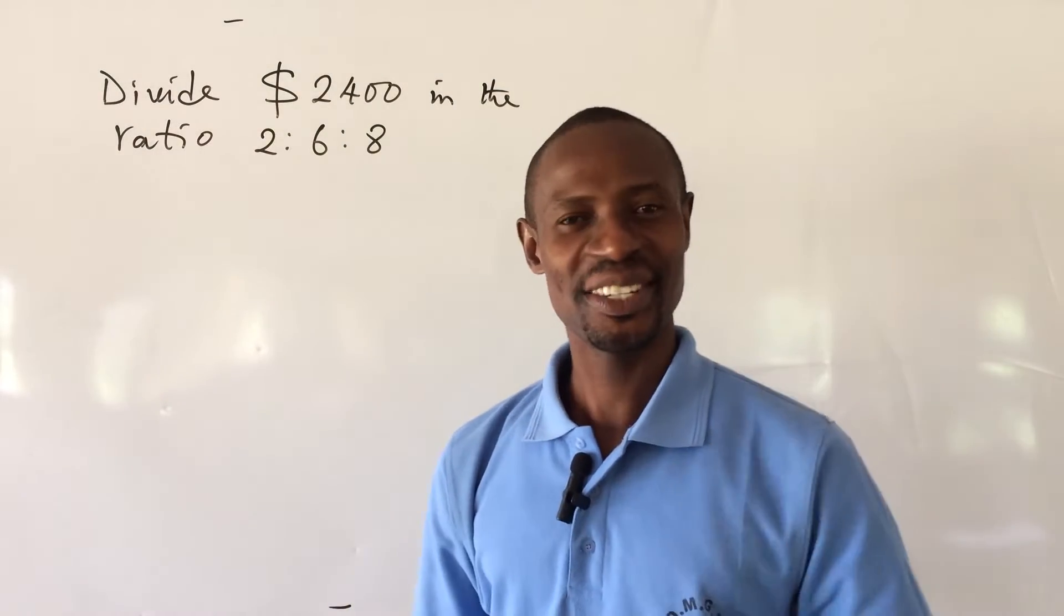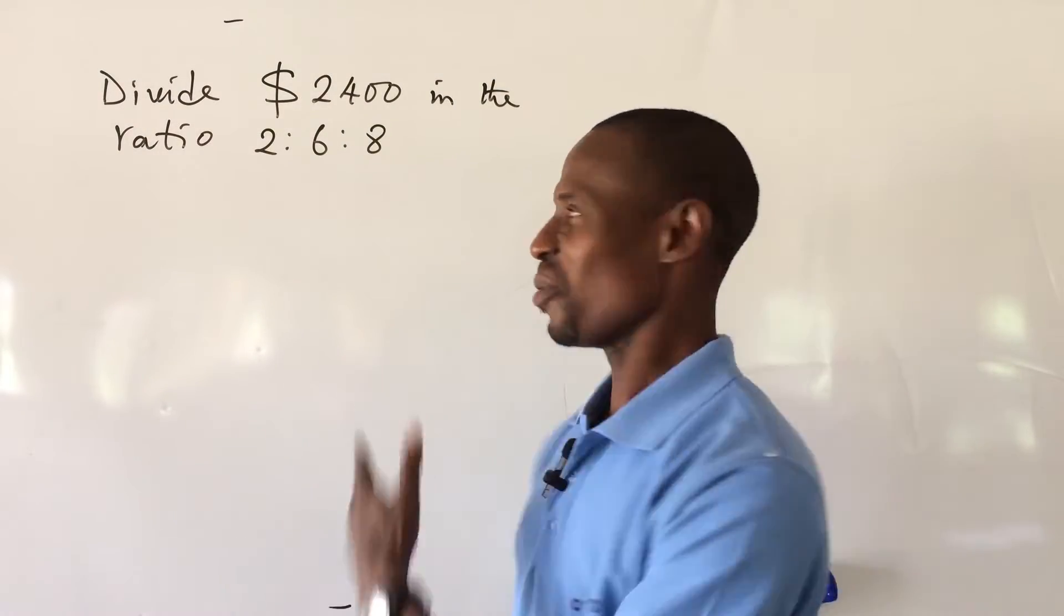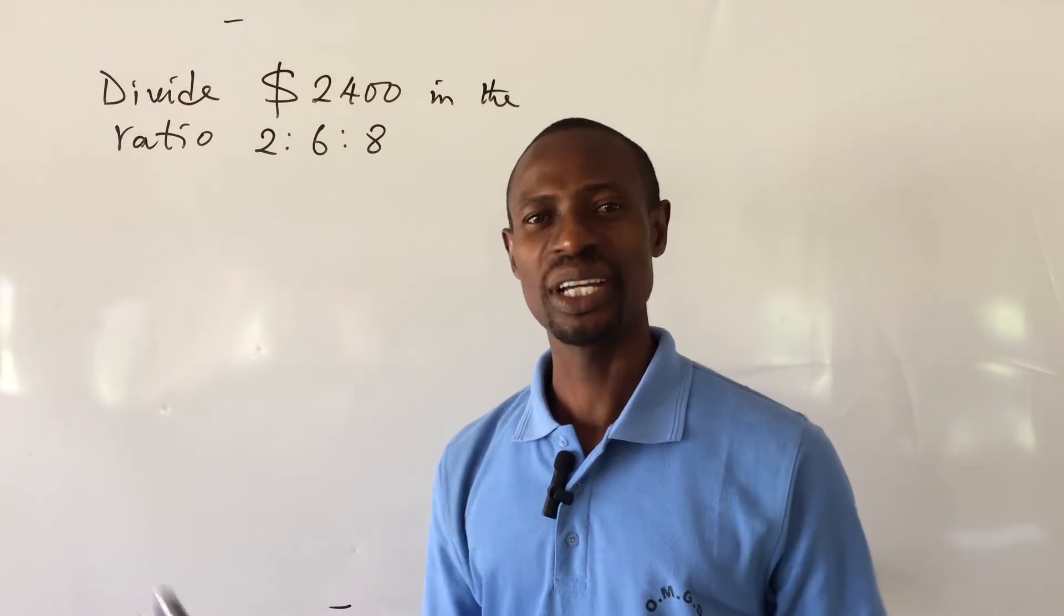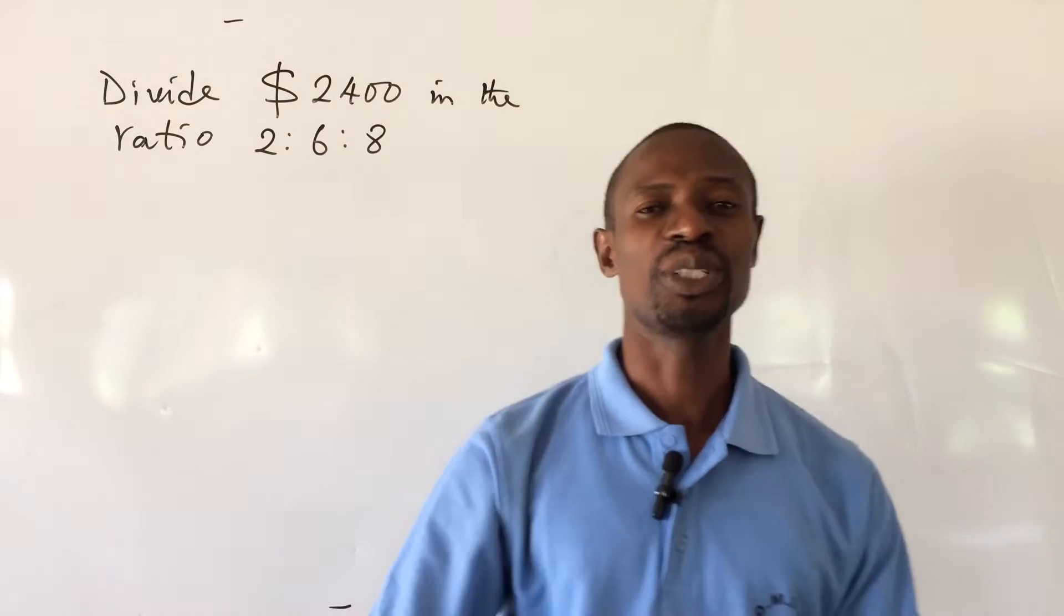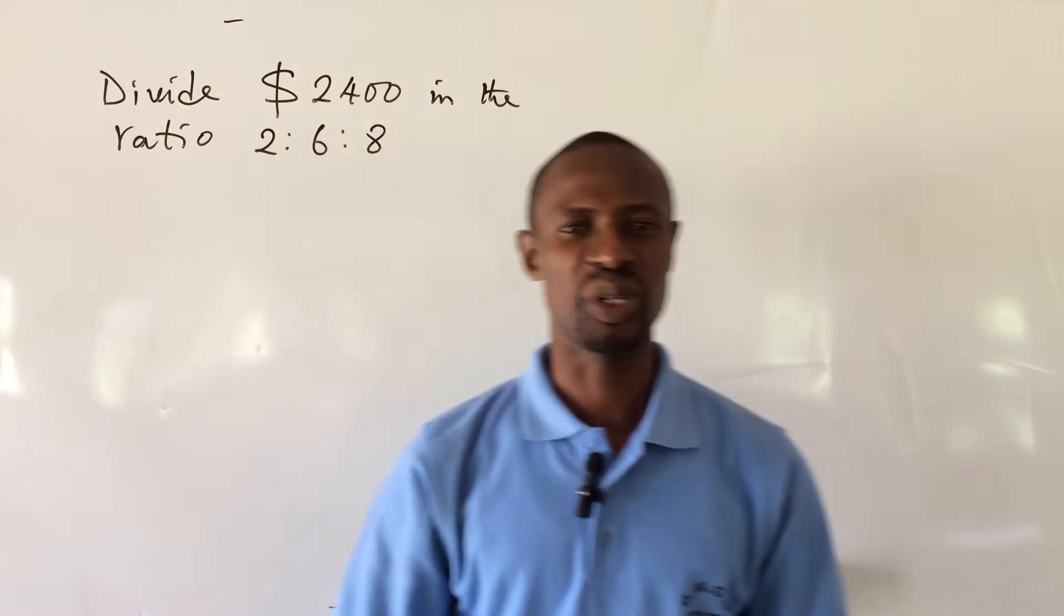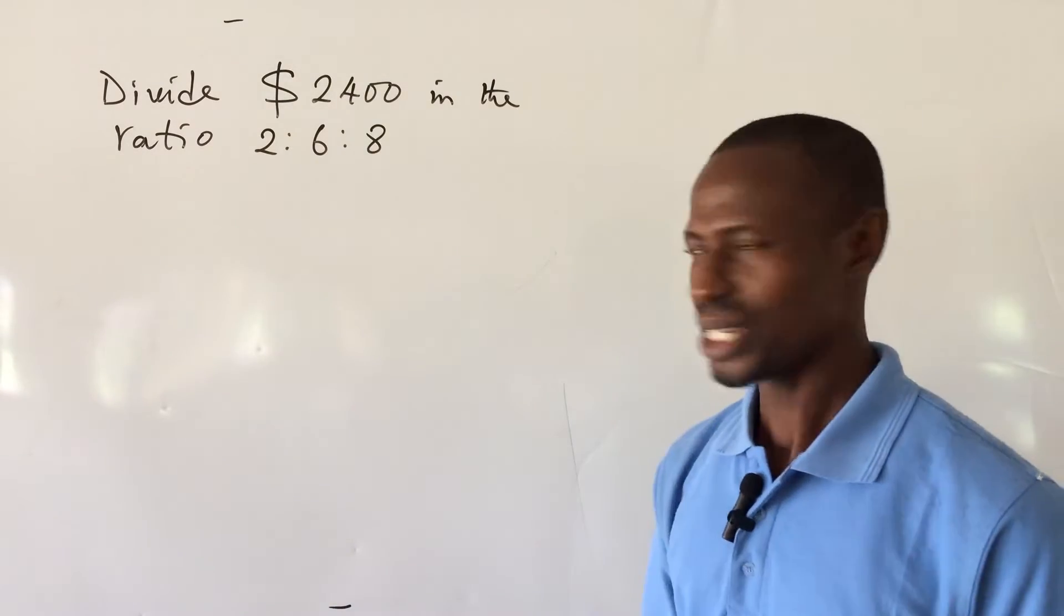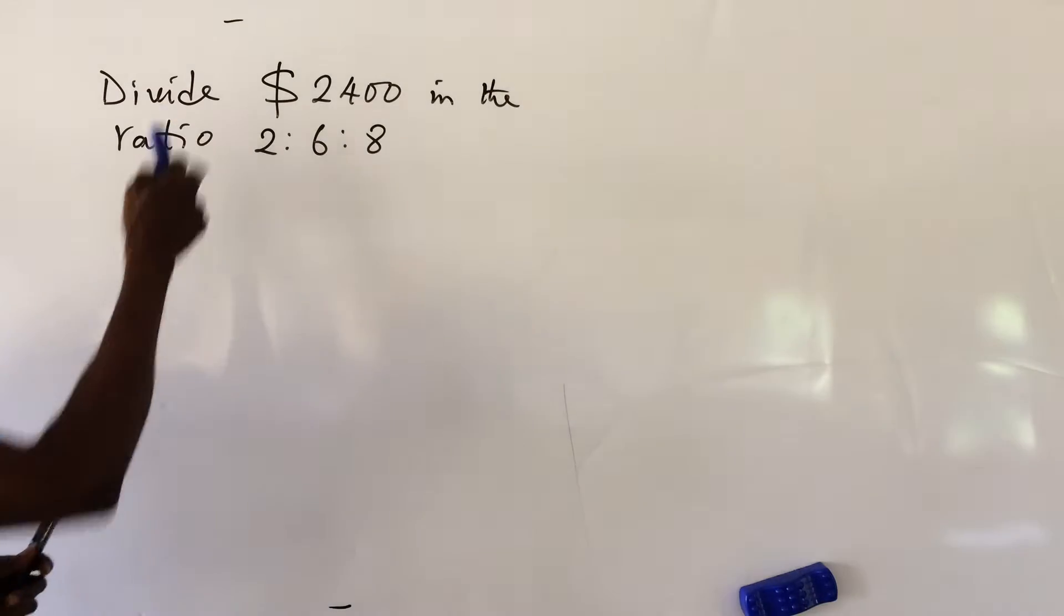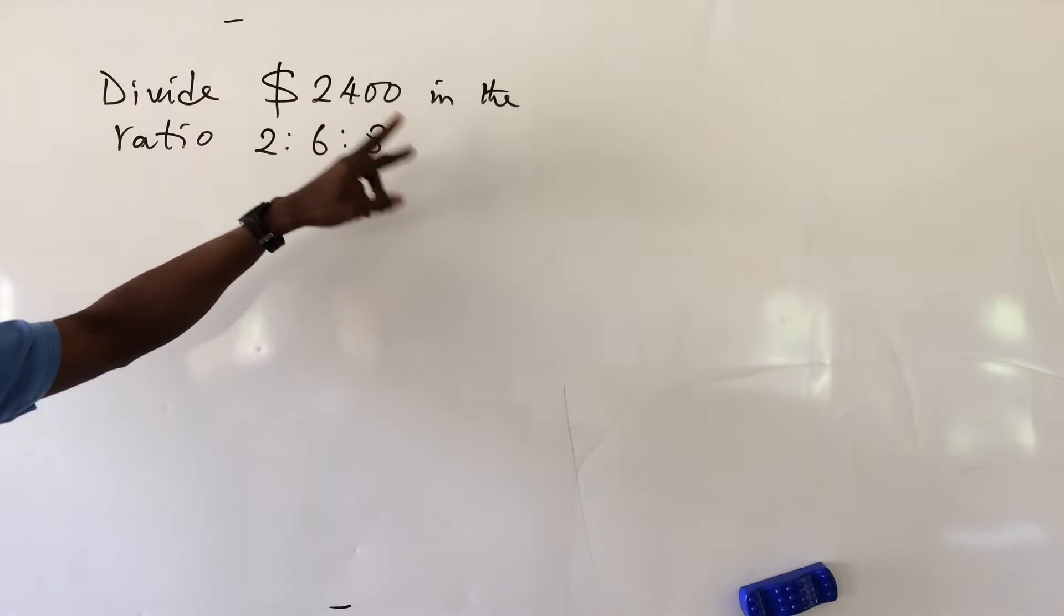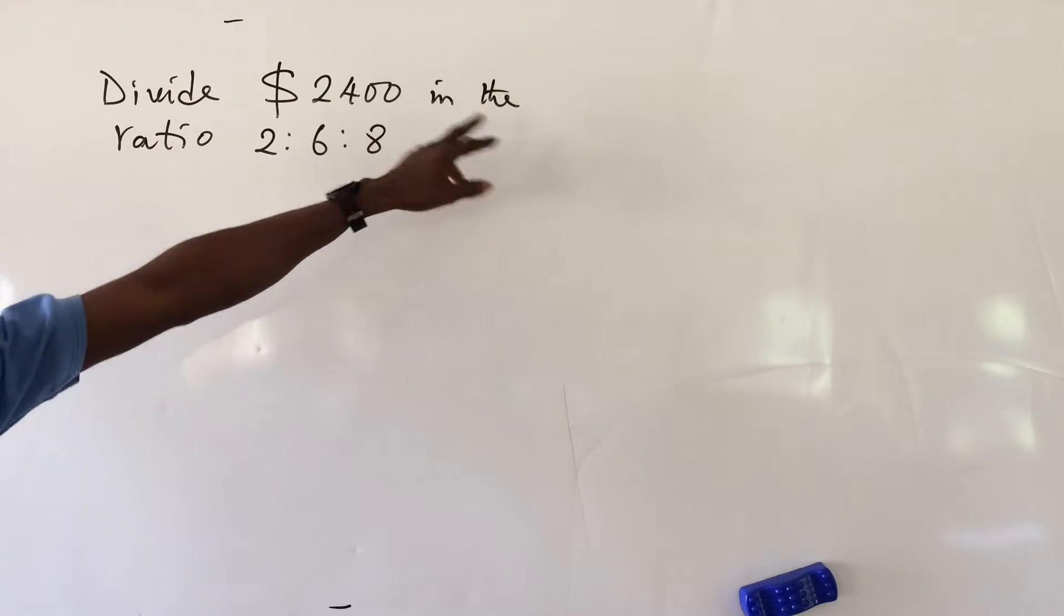Hey, don't go away. This is Online Math TV. Okay, here we have a challenge on ratio. Before we go to this challenge, if you are new to this channel, my name is Jakes. So let's go into this challenge without much waste of time. It says divide $2400 in the ratio 2:6:8.